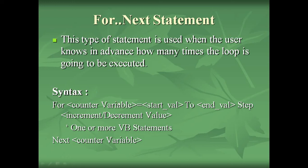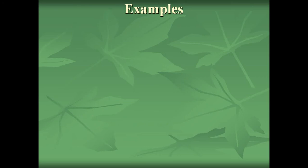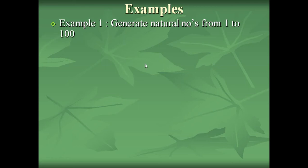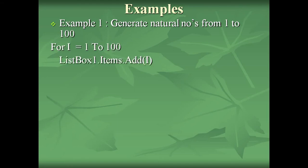The counter variable is initialized with the start value and keeps track of how many times the loop has executed. When the counter variable reaches the end value, the loop is terminated. At every iteration, the counter variable value will be incremented or decremented as specified. The first example is to generate natural numbers from 1 to 100 using the For...Next statement. The code is: For i = 1 To 100, ListBox1.Items.Add(i), Next i.